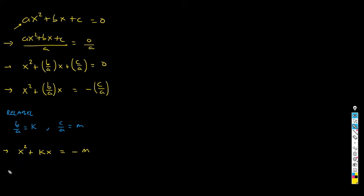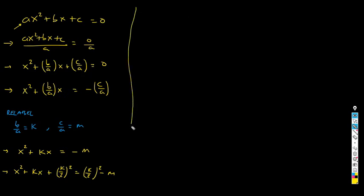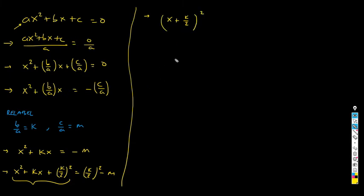And now we complete the perfect square trinomial. We're going to get x squared plus kx plus the square of half of this number — k over 2 squared — and we add it to both sides. Now, this is a perfect square trinomial, which can be written as a binomial to the square. This should be somewhat easy for you now. And the right side, I'm just going to write it down again.